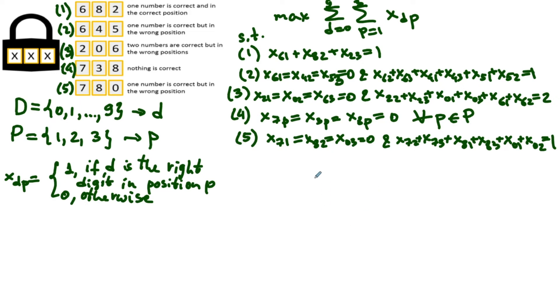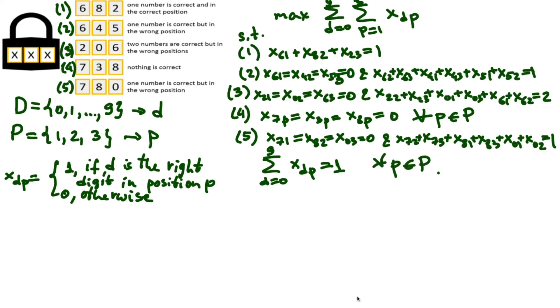But something else is missing. Yes, we need to write the constraint ensuring that each position is occupied by exactly one digit, so the summation of x dp's over all the possible d's equals to one for each p. Excellent, we have finally formulated the model, so now we are ready to solve the puzzle.